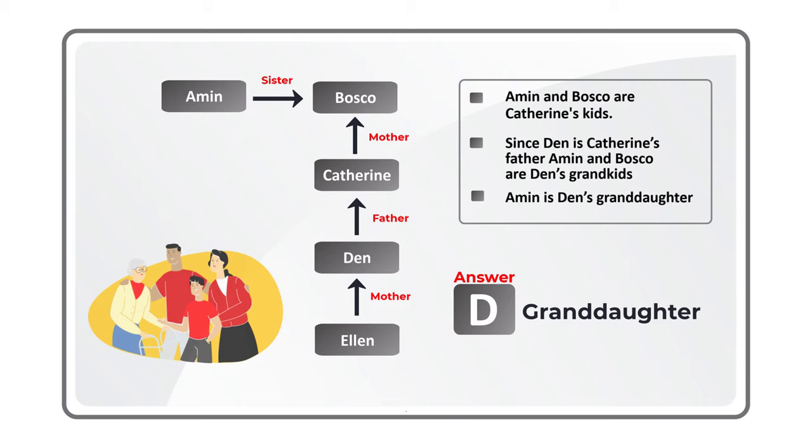So the correct choice here is choice D, granddaughter. Hopefully you've nailed this question and now know how to diagram and solve similar problems on the test.